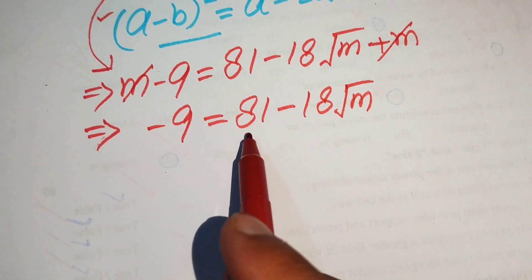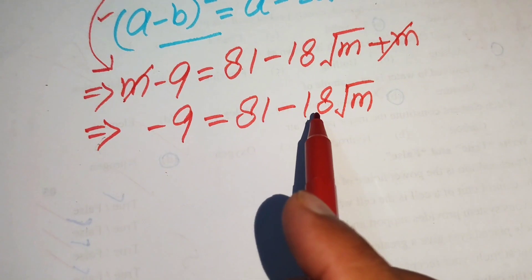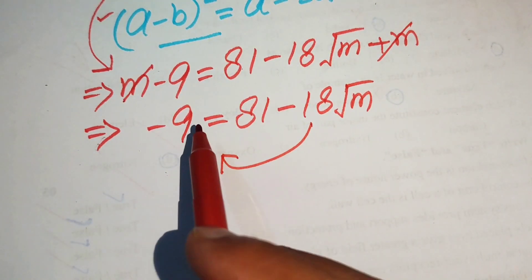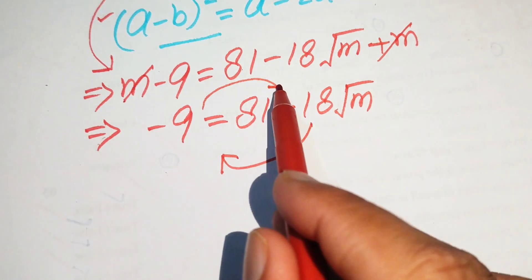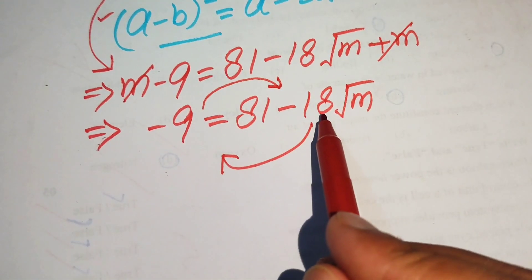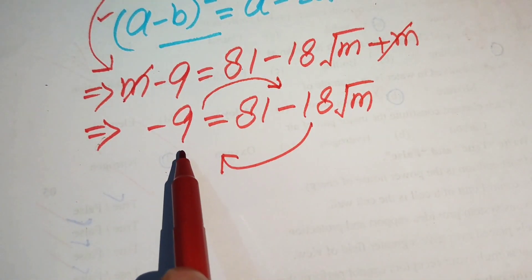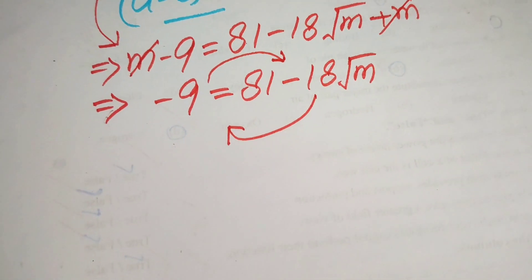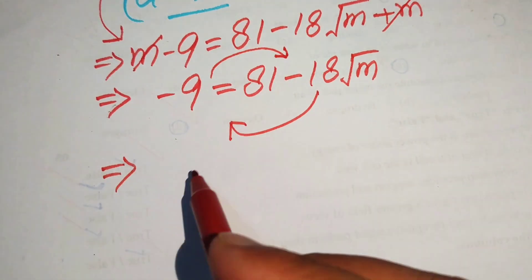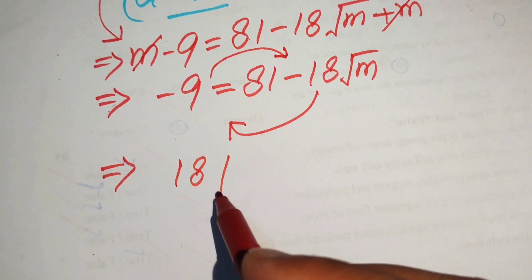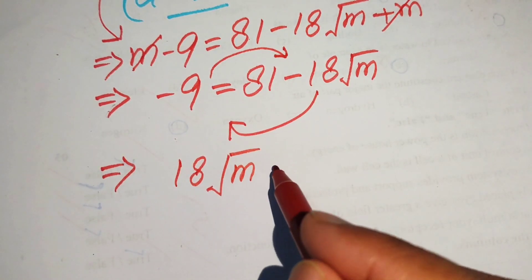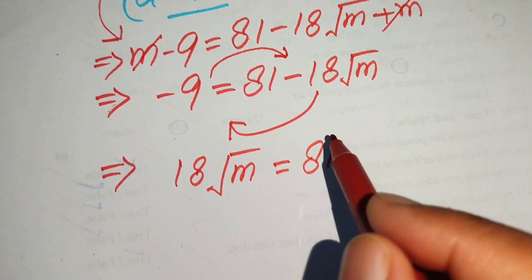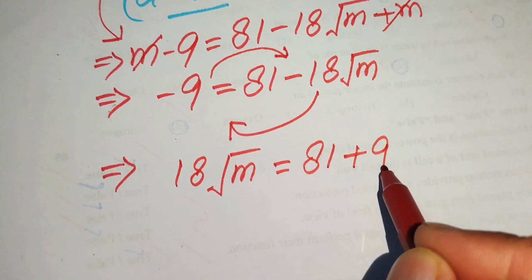We move minus 18 times square root of m to the left hand side and minus 9 to the right hand side. After interchanging these values we write it as 18 times square root of m equals 81 plus 9.